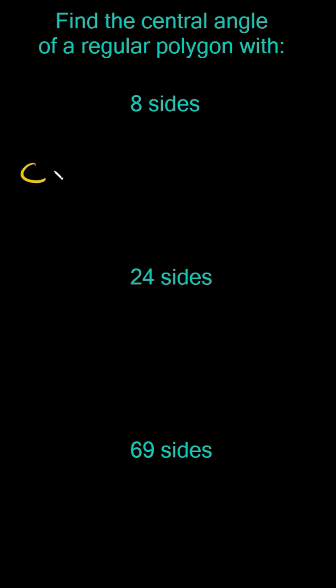So we can say that the central angle of a regular polygon is simply equal to 360 divided by n, where n is the number of sides.